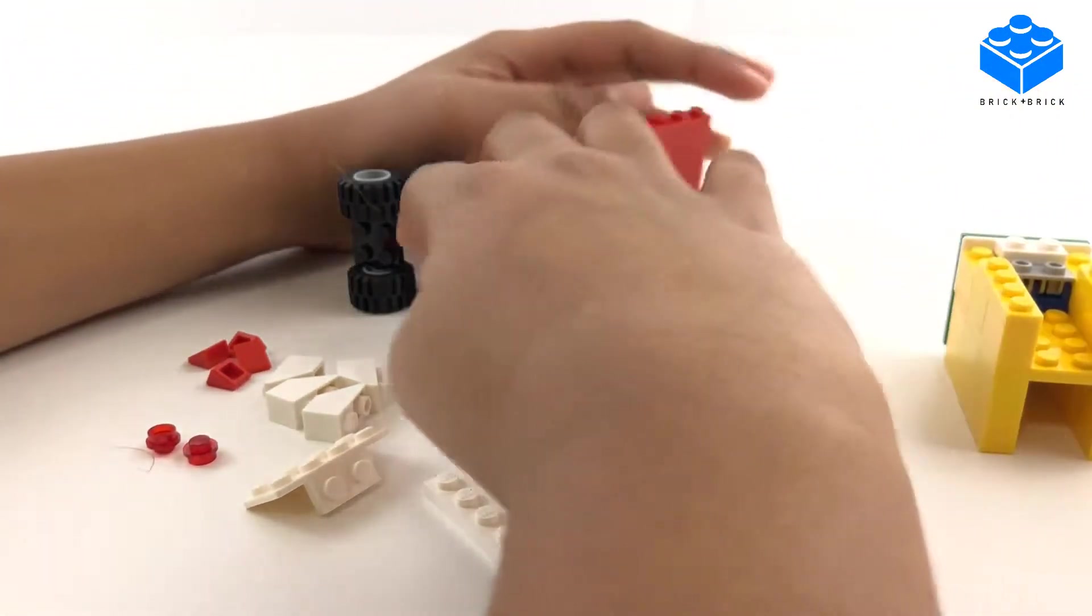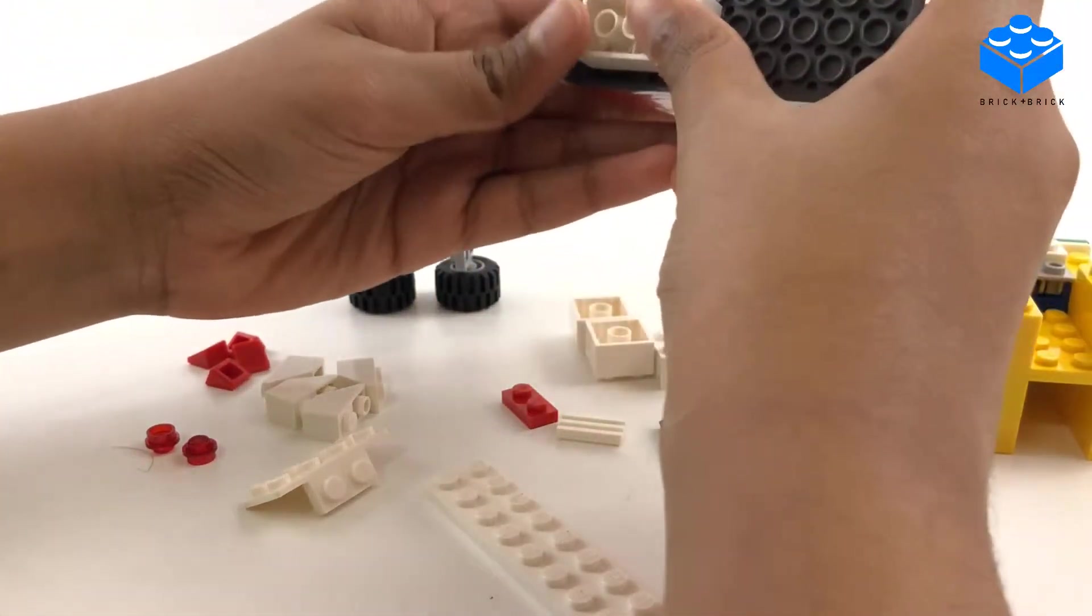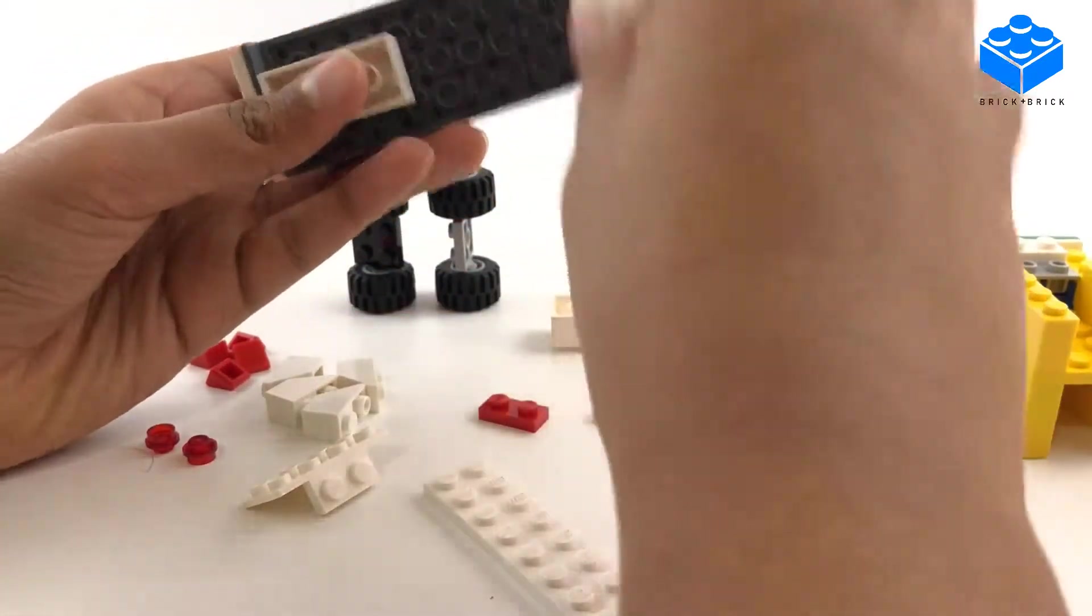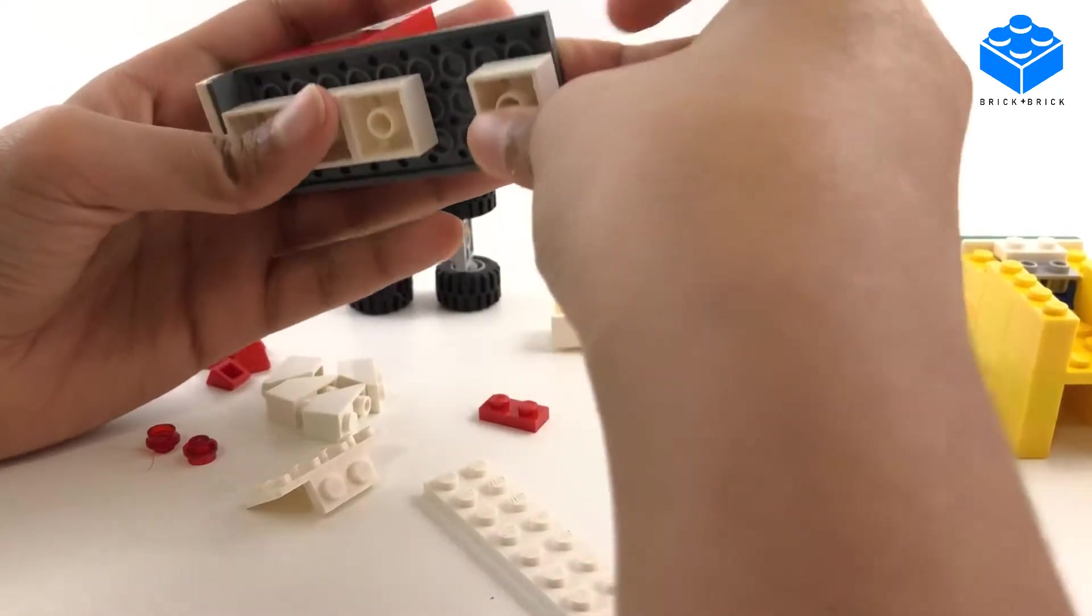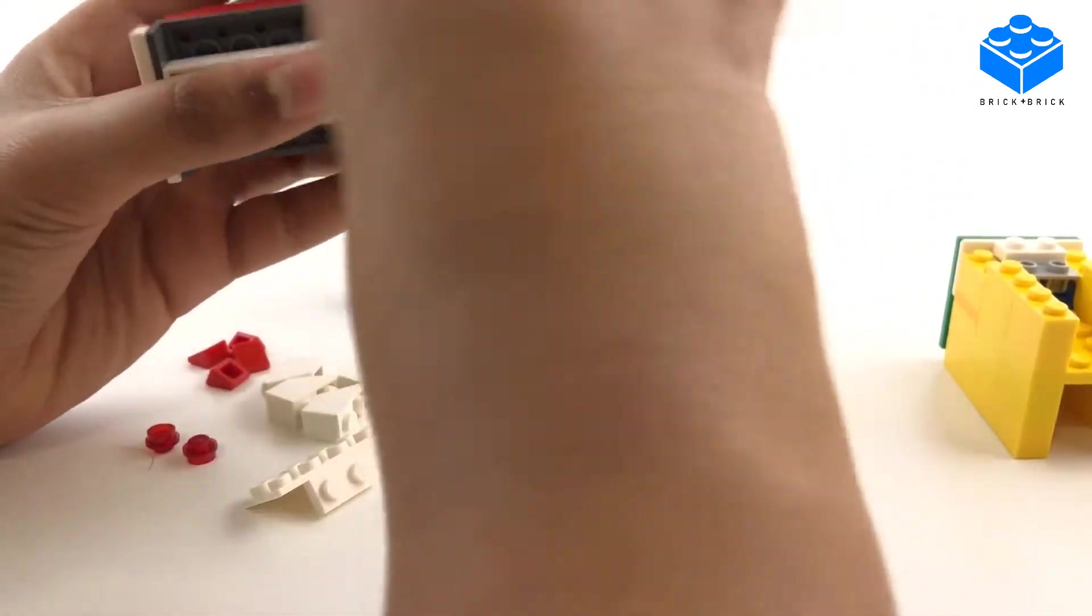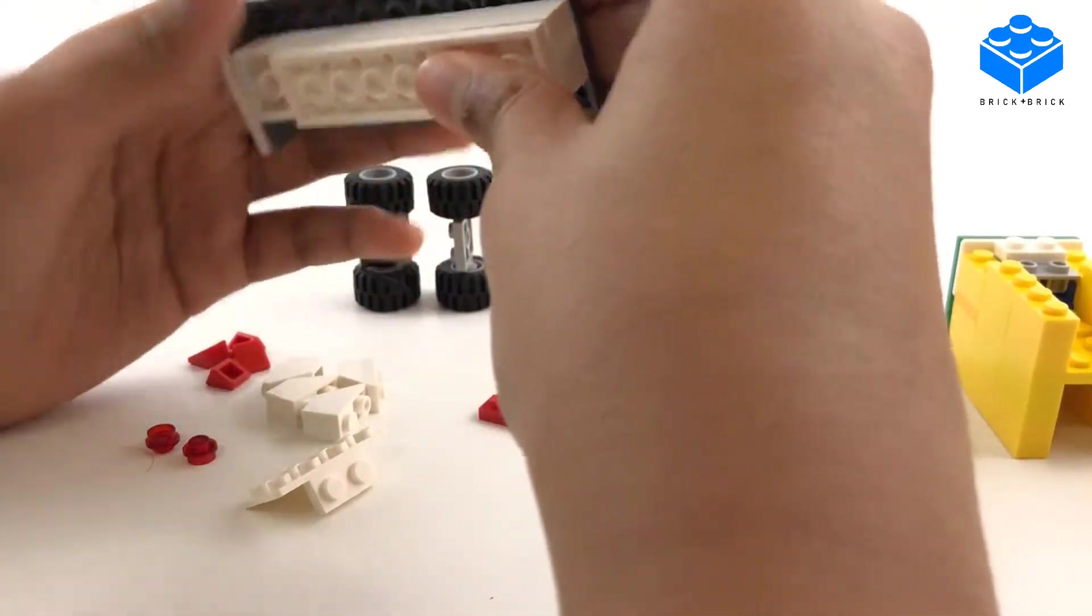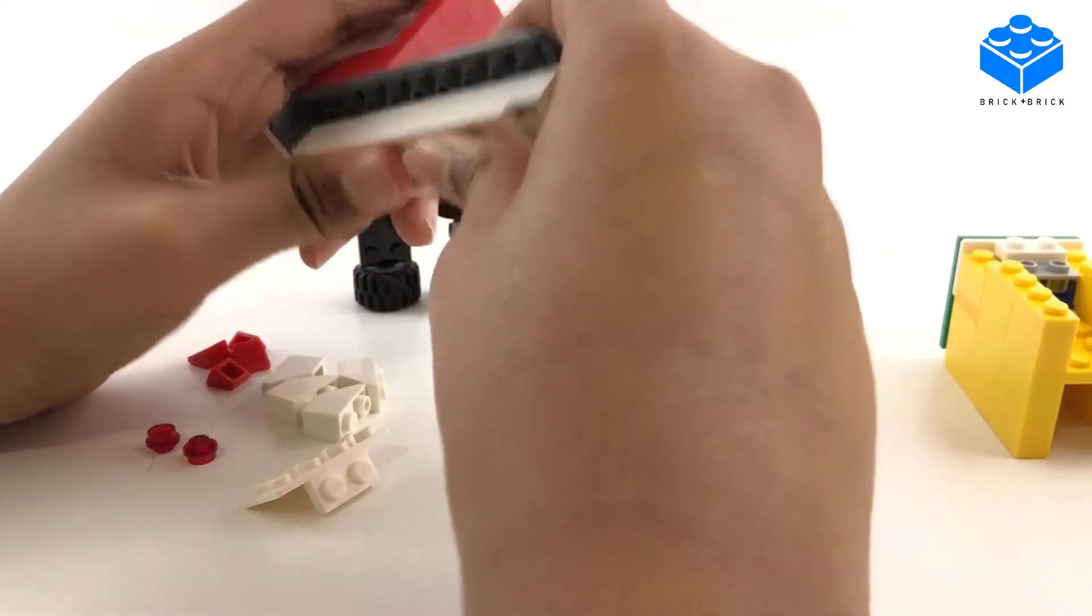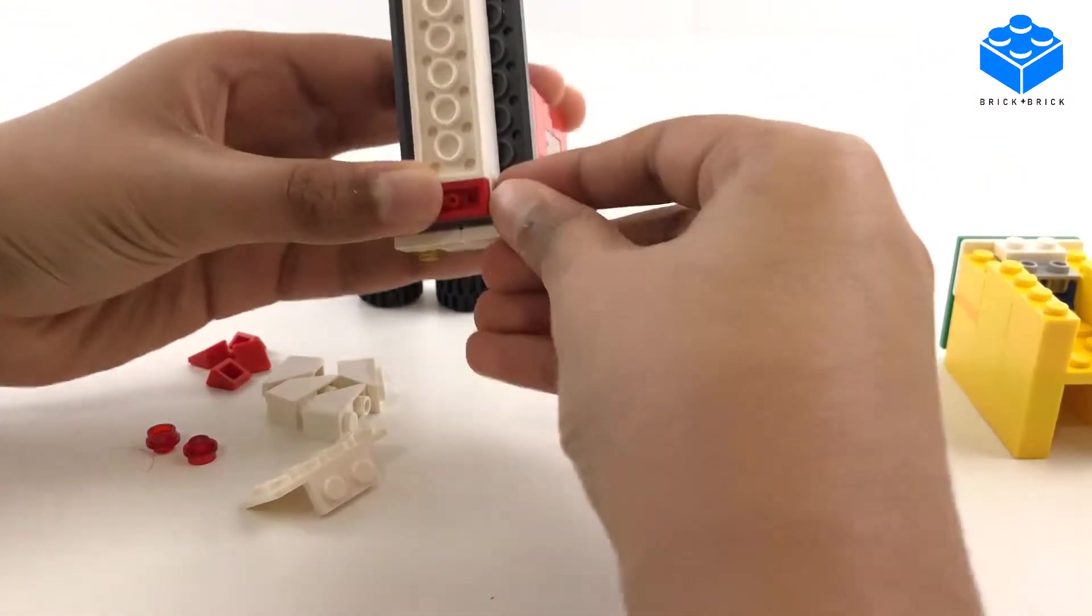So first we need to build the bottom of our axle, which will be just a couple places for the wheels, which can all just be used by two by twos. Then we need a two by eight flat piece to go here, this red piece to go at the front.